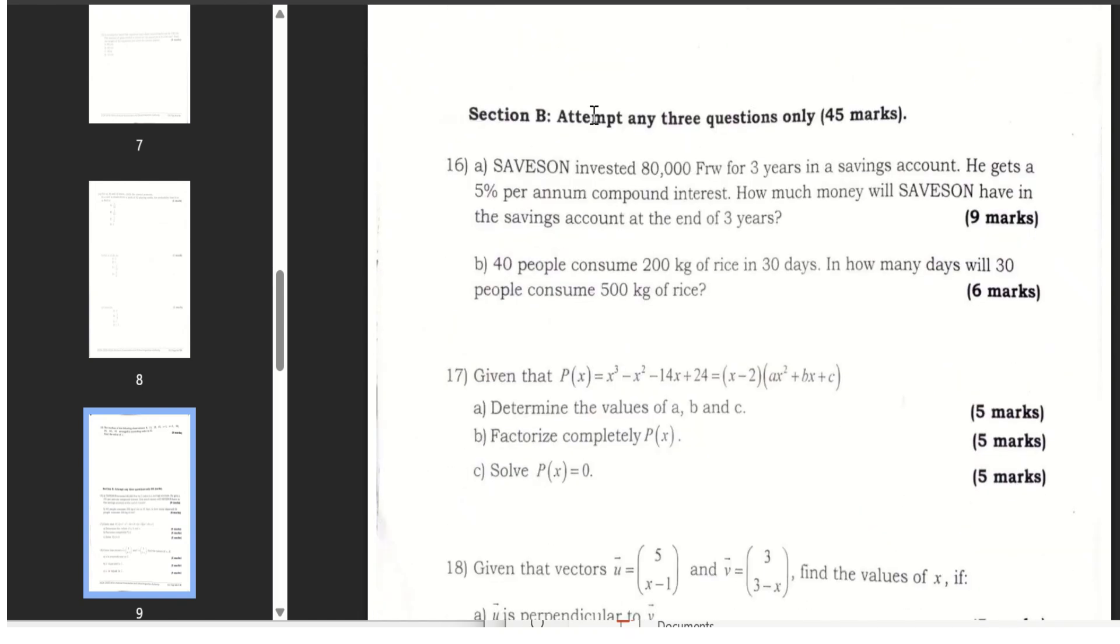So this is what the section A. Section B, attempt any three questions. Here you must choose the only three questions.